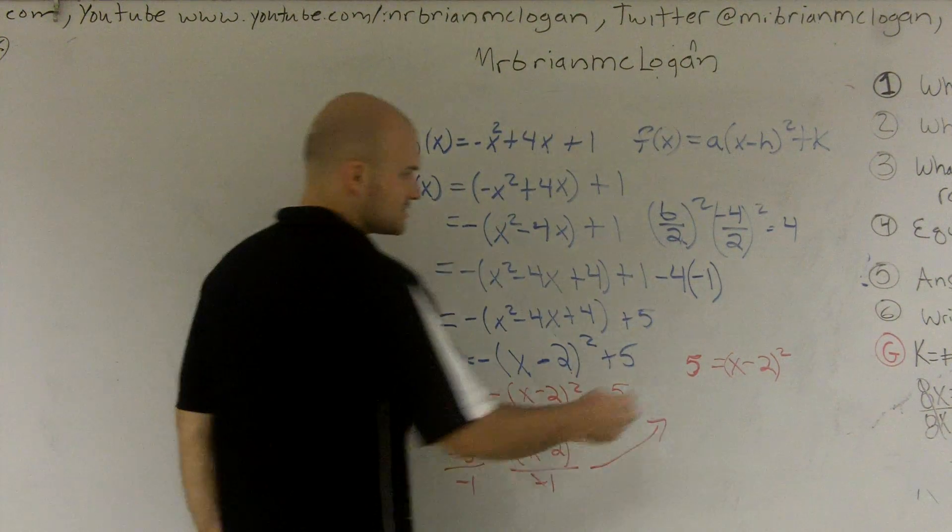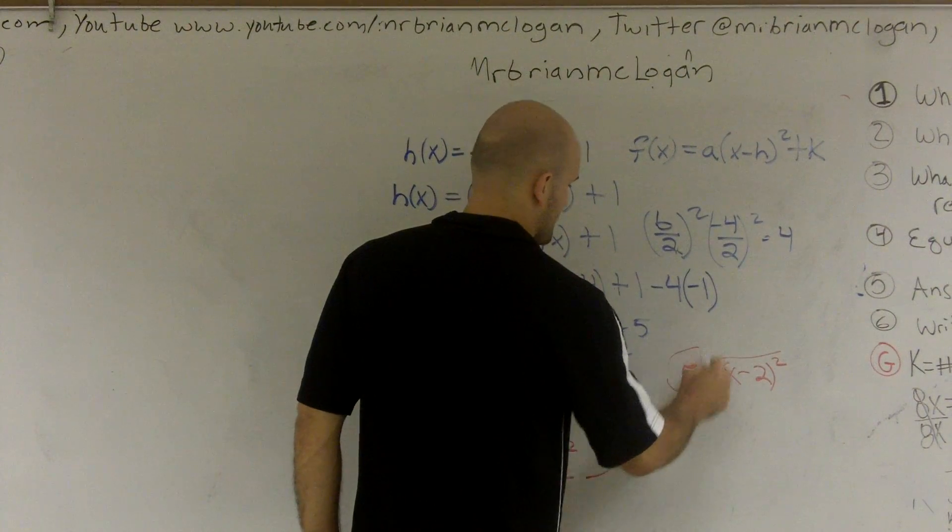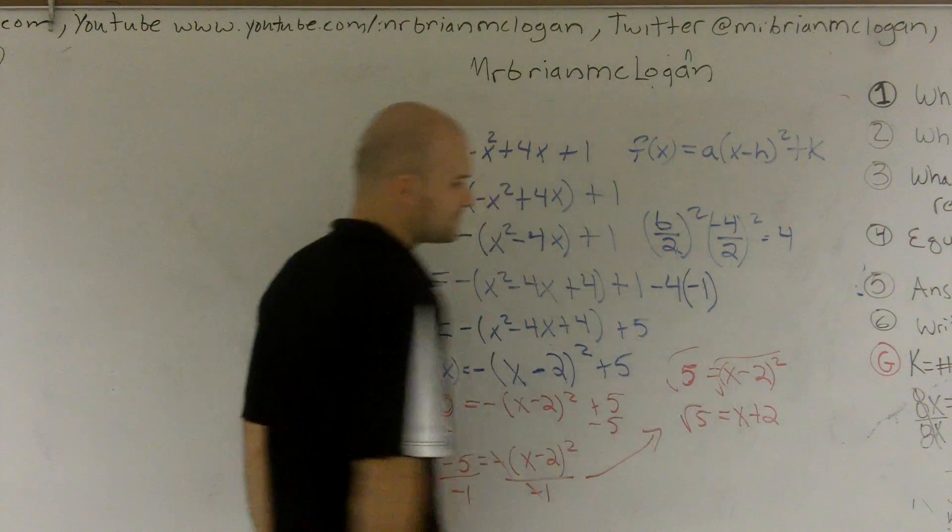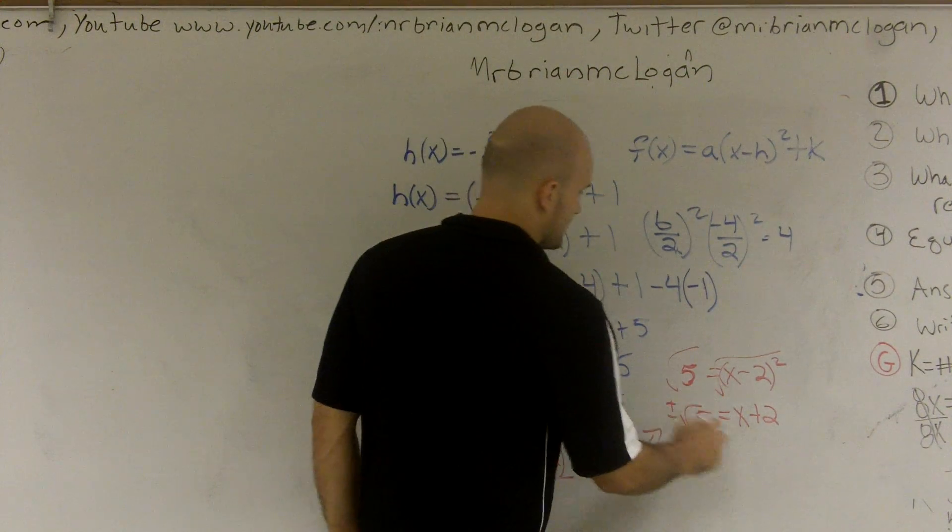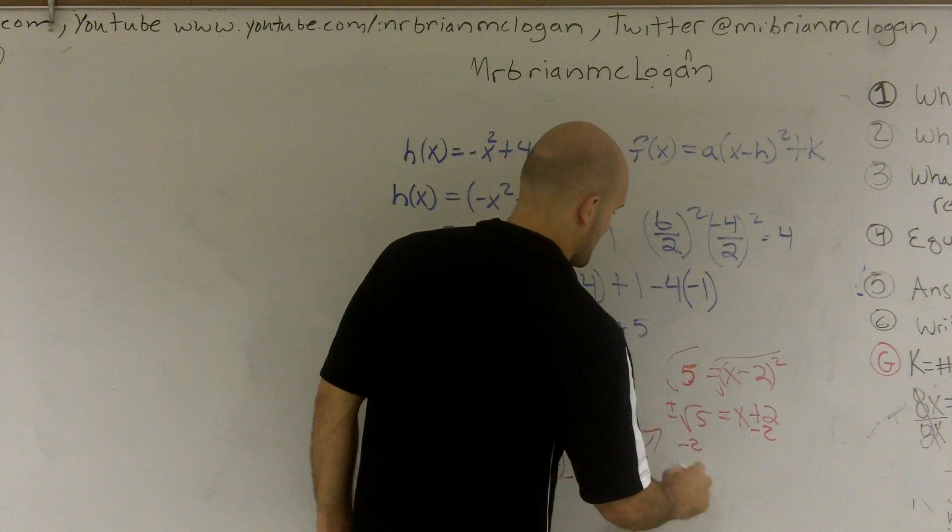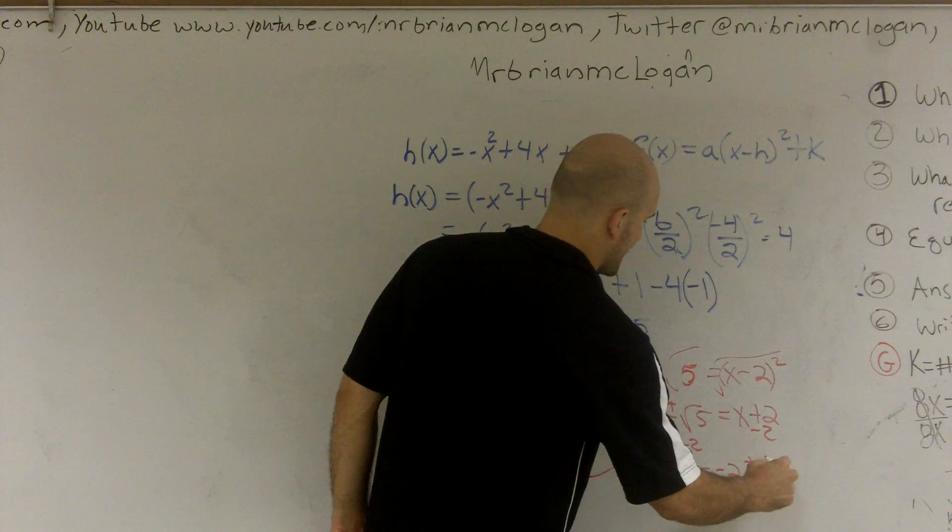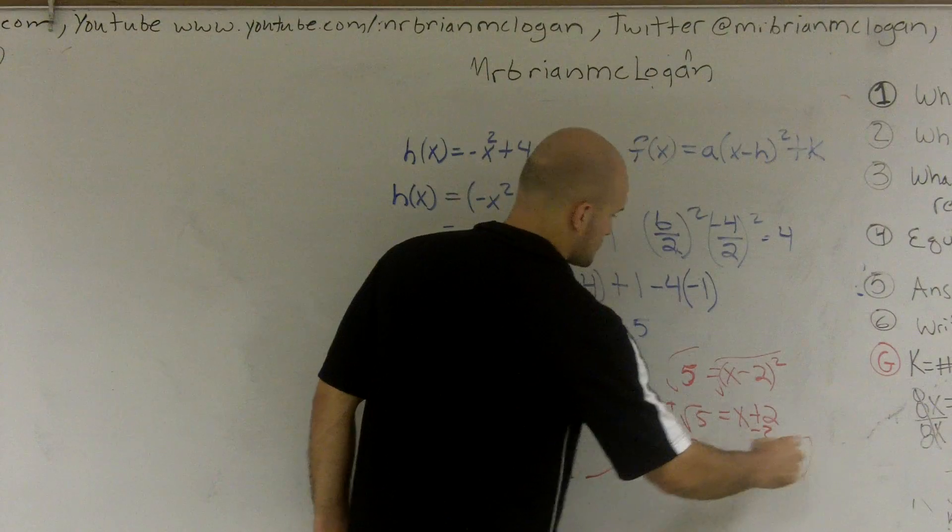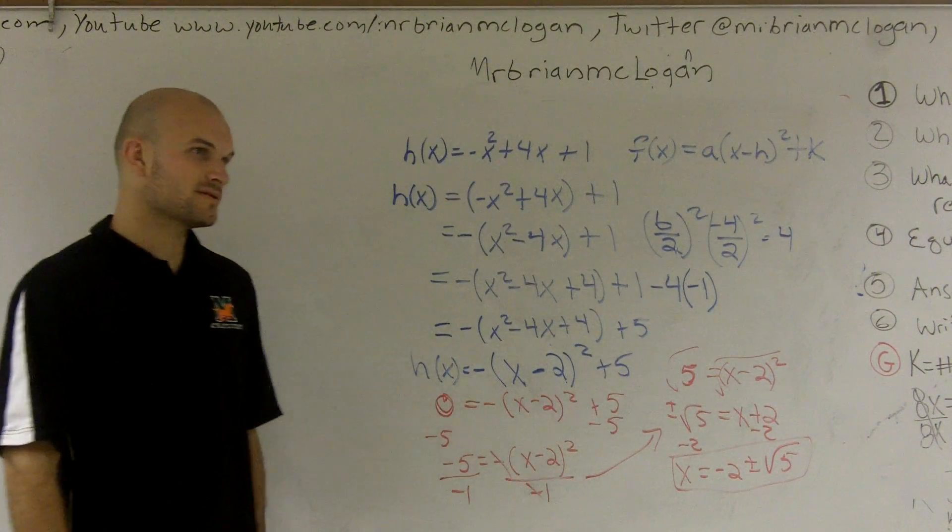Now, I can take the square root on both sides. So I have the square root of 5 equals x minus 2 plus or minus. Then I subtract 2. So I get x equals negative 2 plus or minus square root of 5. And those would be my two x intercepts. Does that make sense?